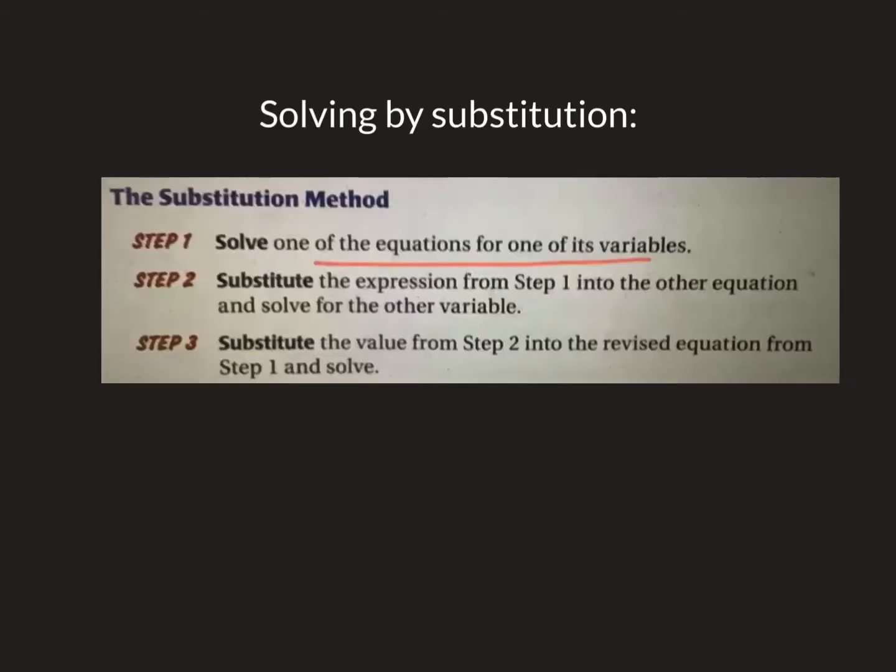First method is called substitution, and the substitution method has three steps. First, we're going to solve one of the equations for one of its variables. We're going to try to find a variable that has a one as a coefficient and solve for it. Then we're going to substitute from that into the other equation. That's why it's called substitution. And then we're going to substitute that into the original equation to get the other answer.